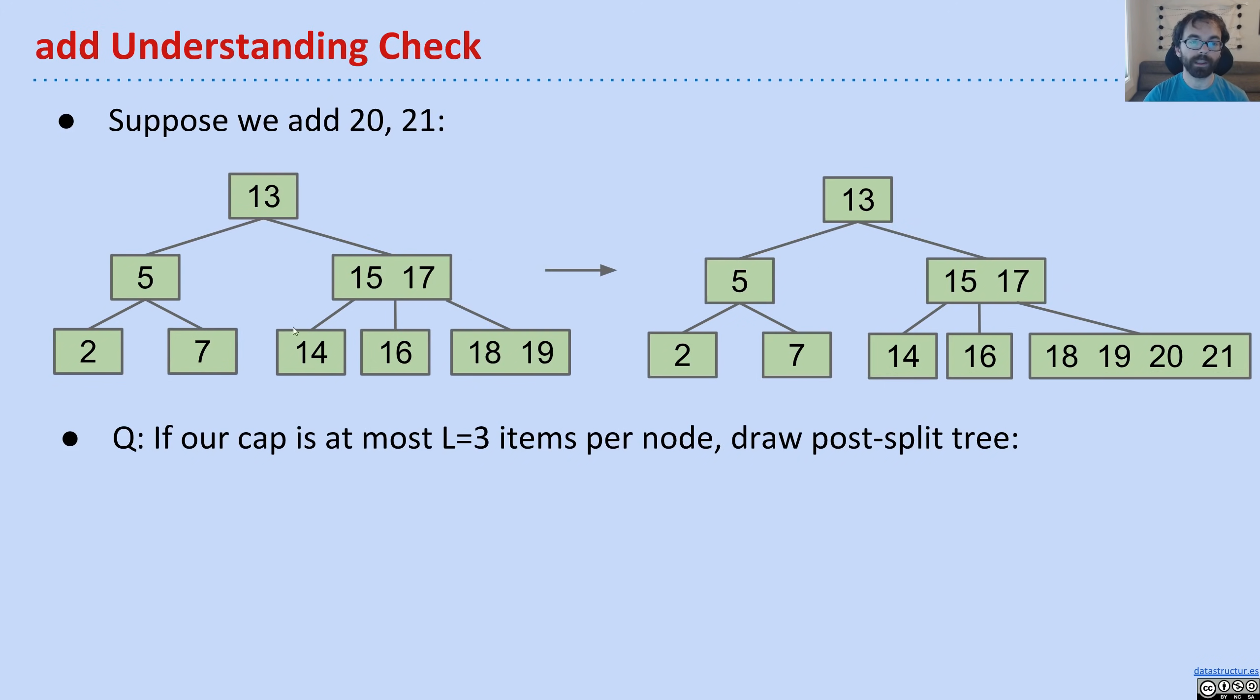So let's suppose we're right where we were, and we add the numbers 20 and 21. So at this point, this node is violating our limit. So I'd like you to draw the post-split tree, what it will look like. So after the split, hopefully you've paused the video, 19 is going to move up to the parent.